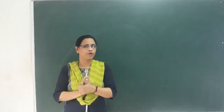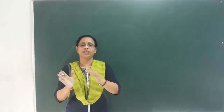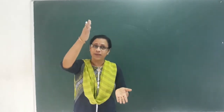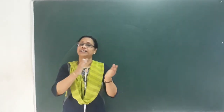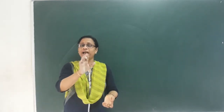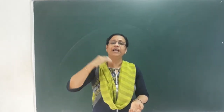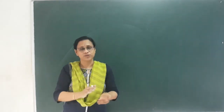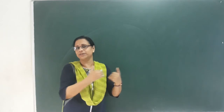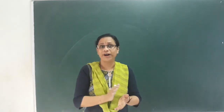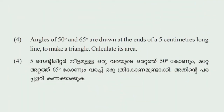We are learning the same ratio for the right angle triangle. Let's take a look at the fourth question, page number 109. Fourth question: how are angles of 50° and 65° drawn at the ends of a 5cm long line?